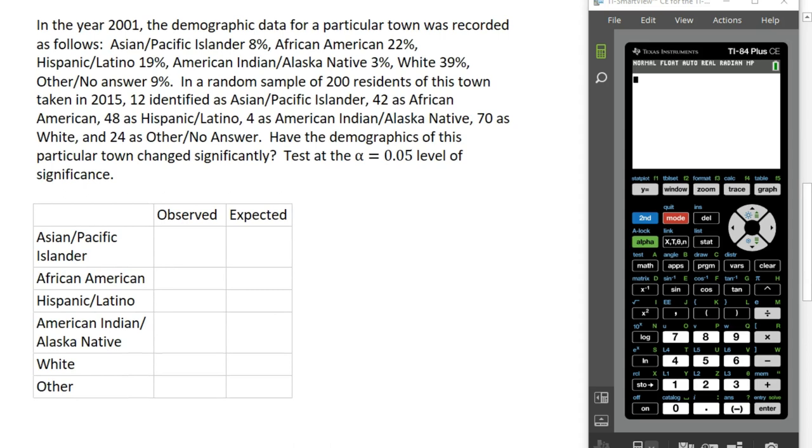In the year 2001, we have demographic data for a particular town recorded as follows: 8% of the population identified as Asian Pacific Islander, 22% African American, 19% Hispanic Latino, 3% American Indian Alaska Native, 39% White, and 9% other or chose not to answer.